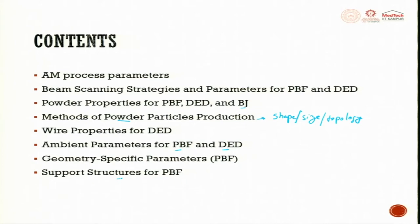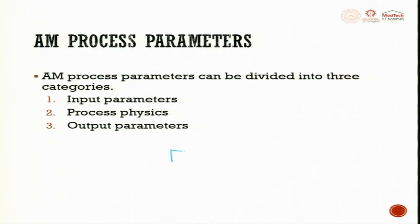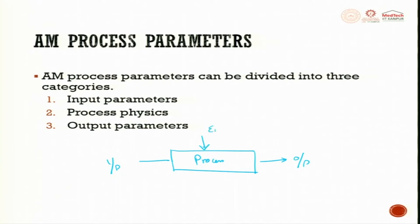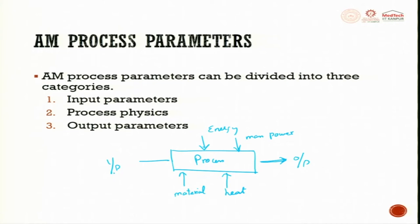Finally, we will look at support structures for powder bed fusion. When we take any process, you will have input and output. In the process you might have energy, manpower, materials, heat energy — all these things are applied and finally you get the output. Any process has input parameters, output parameters, and process physics. Additive manufacturing also follows the same framework, with the process parameters divided into three categories: input parameters, output parameters, and the process physics involved.